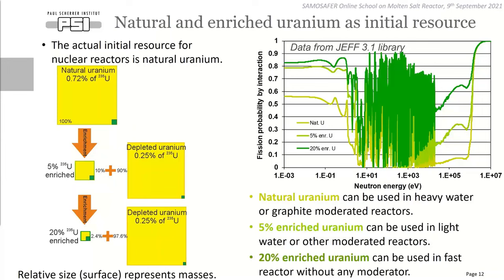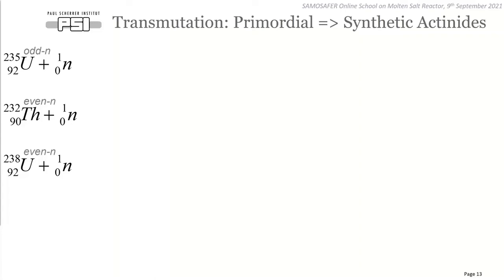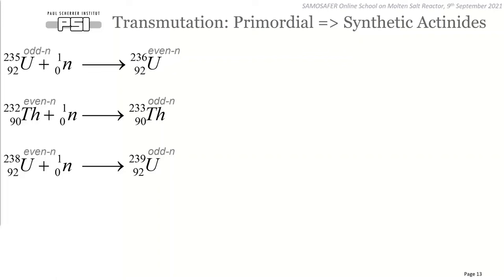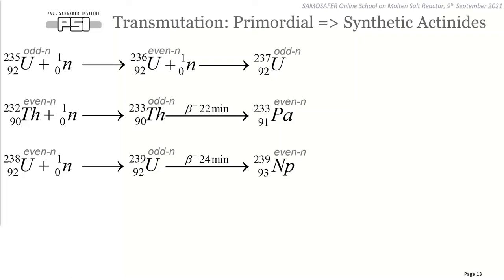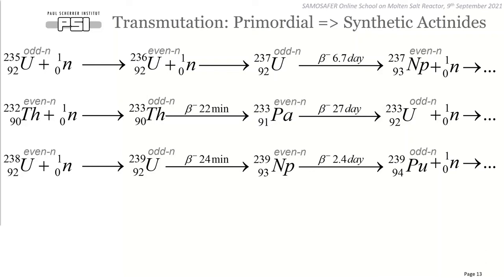We usually enrich uranium — increasing uranium-235 content typically to 5%, giving around 80% fission probability — and then you can use it with light water. The limit for enrichment is 20%, and such fuel has a reasonable chance for fission also in fast spectrum, usable without moderator. All three primordial actinides can be transmuted by neutron capture to create synthetic actinides, which can undergo further neutron capture or beta-minus decay to create more synthetic actinides. In the reactor there are three basic transmutation reactions: neutron capture, beta-minus radioactive decay, and n-2n reactions — all altering neutron number by one.